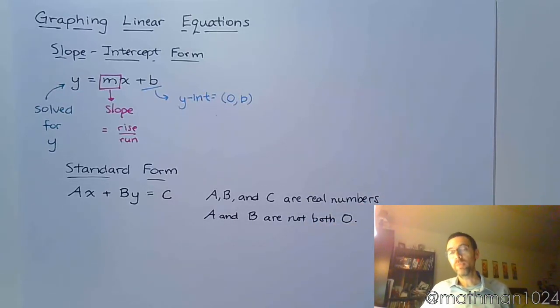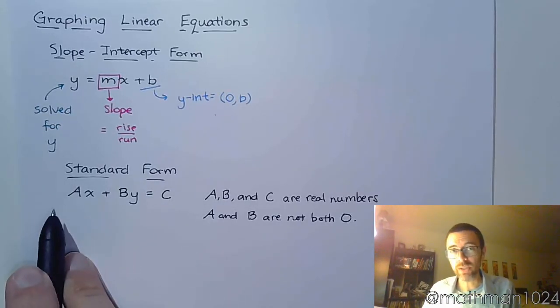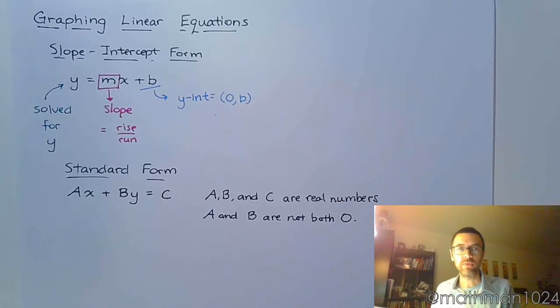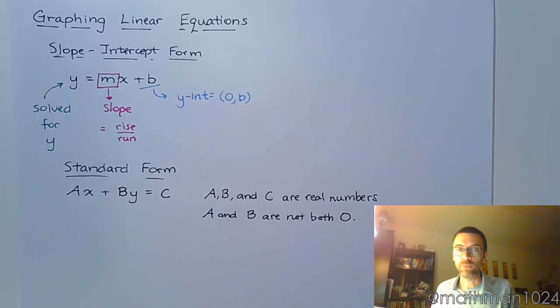And A and B are not both 0. Now, one of them can be 0, but they can't both be equal to 0, or else we'd have a problem here. So if we have 0x and 0y, we don't have any variables, and it just causes a big problem for us.